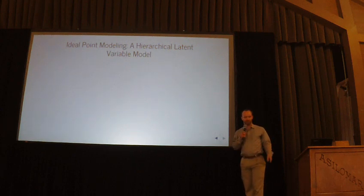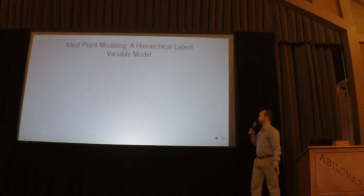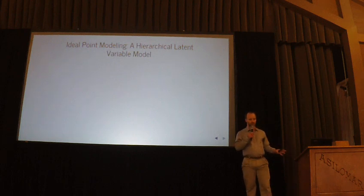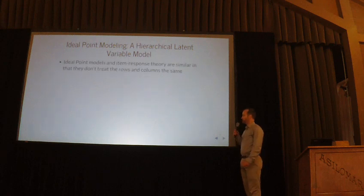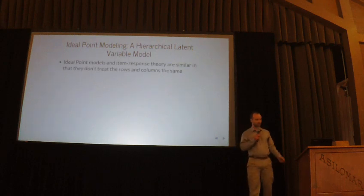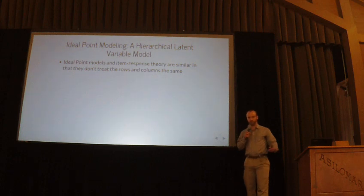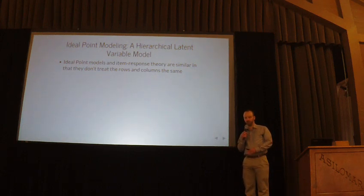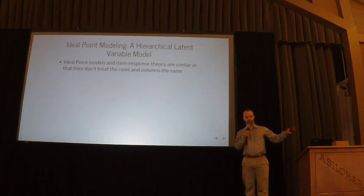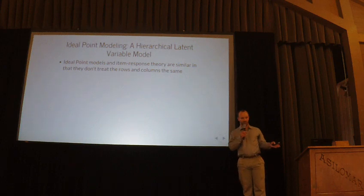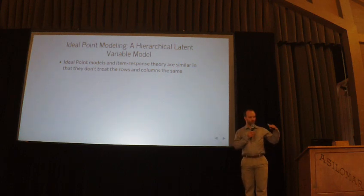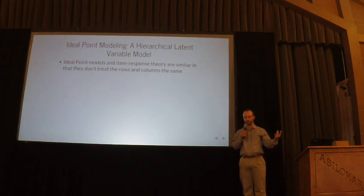So I define an ideal point model as a hierarchical-style latent variable model. I'm abusing the word hierarchical because I'm not talking about multi-level stuff or hyperpriors. Instead, what I'm talking about is how we think about the rows and columns in the matrix that has the data — the observable indicators. Ideal point models are similar to item response theory models in that they don't treat the rows and the columns the same. Matrices don't have to be symmetric, and if you transpose that matrix, you're going to get a different result.